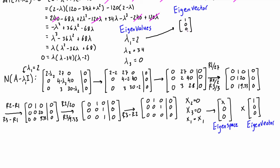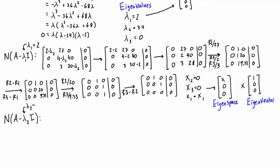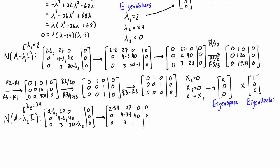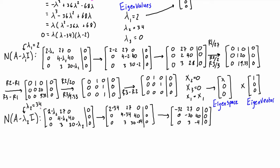Now we're moving on to finding an eigenvector that belongs to λ₂. We're going to do this in exactly the same way, setting up the null space of A minus λ₂I. I just noticed that earlier I wrote the subscripts as λ₂ — I got confused because the value was 2, but we should correct that: those should be λ₁, λ₁, and λ₁. Now we are subtracting λ₂ across the main diagonal of each element in the matrix.